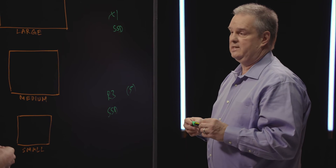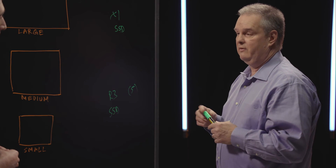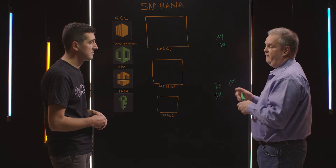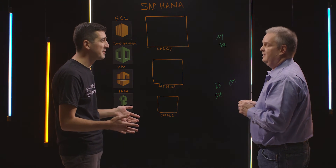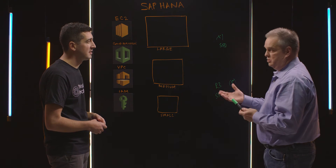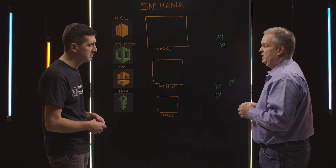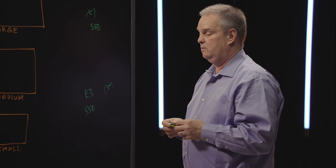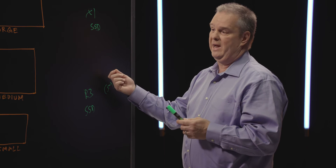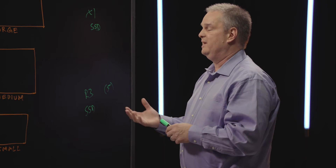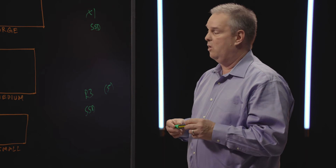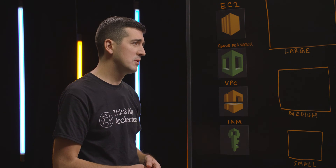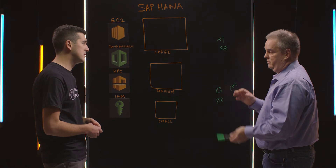We also look at uptime. Things like EC2 auto recovery — you have to use it, it's free. If hardware starts to fail, CloudWatch detects it, and it automatically moves and brings the instance back up. We use some SAP tools and do auto restart for services that may fail. That improves our uptime, which in turn lowers our cost.